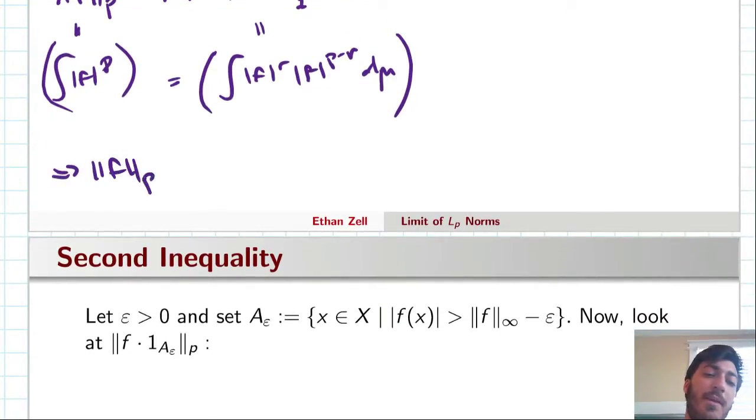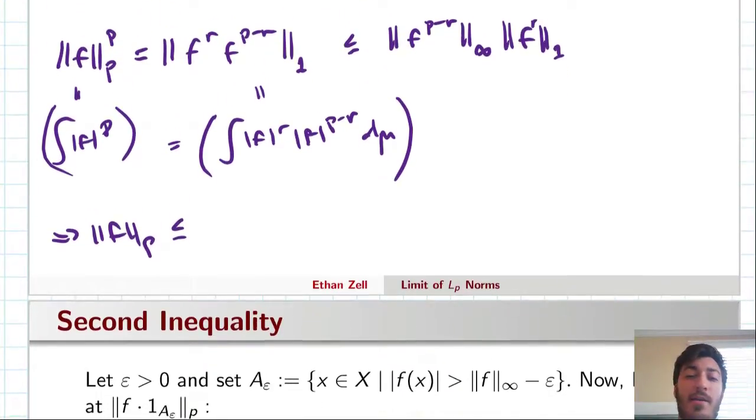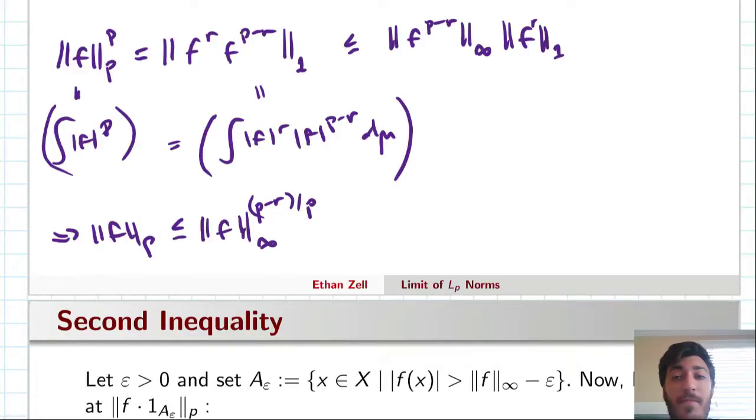Okay, so we're almost there. But let's take the limsup of both sides as p goes to infinity. And the reason we can take the limsup, well, the reason we can't take the limit, again, is because we don't necessarily know that this limit of the p-norms even exists. But we do know that we have a limsup. And in fact, all we're really doing is that little analysis trick where we're just passing the limit.